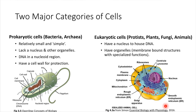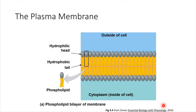Let's start with the plasma membrane, shown in yellow. The plasma membrane is made up of molecules called phospholipids. Here's a schematic of a phospholipid — phospholipids are interesting molecules because they have a polar end in gray and a non-polar end in yellow.